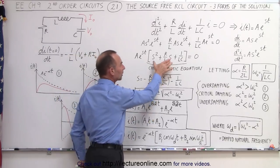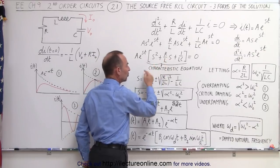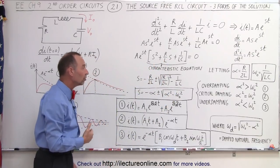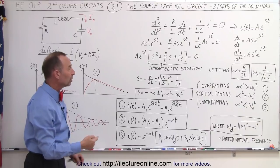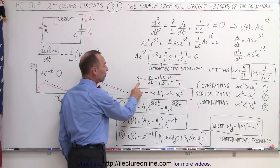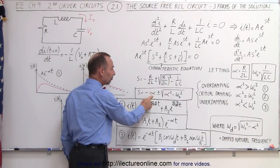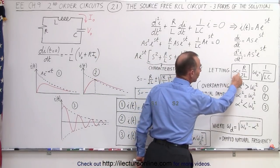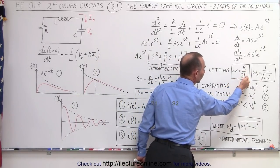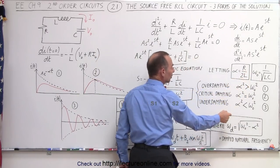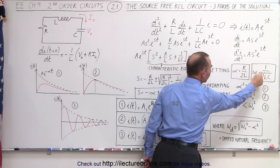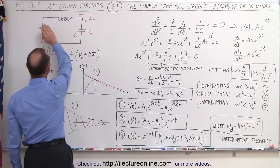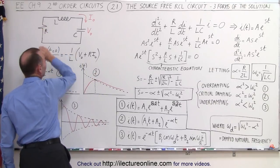We can find the solutions of the characteristic equation using simple algebra for solving a quadratic. We end up with a general solution for s, which we can write in a simple format. We let alpha equal R over 2L, which is called the damping factor, and omega sub-naught equal 1 over the square root of LC, which is the natural frequency of the circuit if we did not have a resistor.